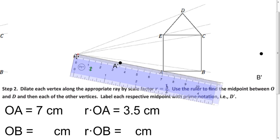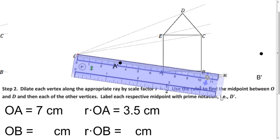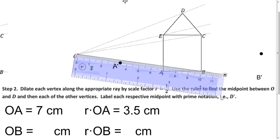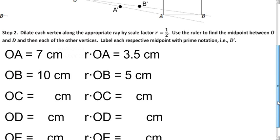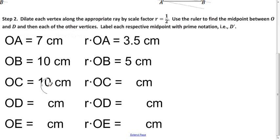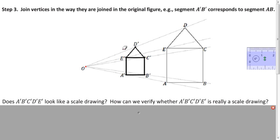Do the same thing for B: the distance from your center to that point is 10 centimeters, and one half of 10 is 5, so B prime is located 5 centimeters from the center on that ray. Repeat that process for all other points. Your diagram may be a different size so you won't have my exact numbers, but the process is the same. Every number on the right is half the number on the left. Plot all those points and connect your vertices so it looks like the original figure.